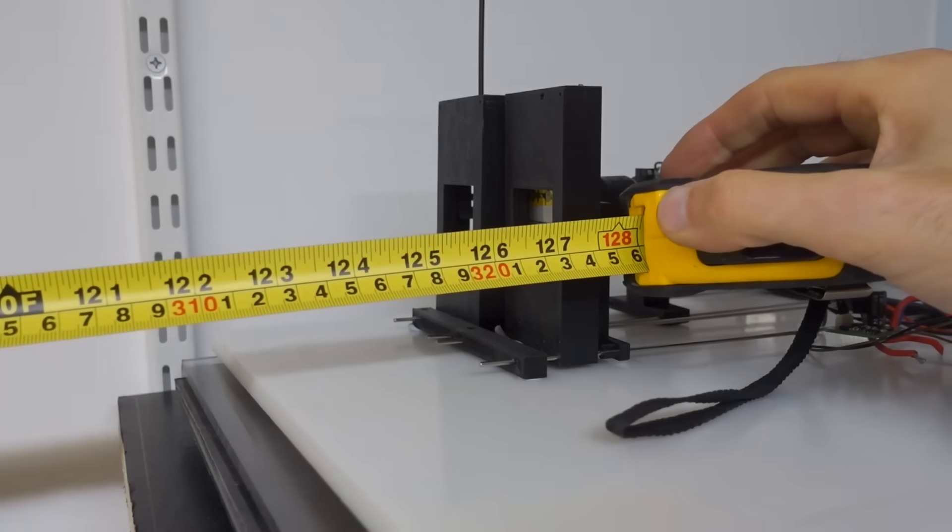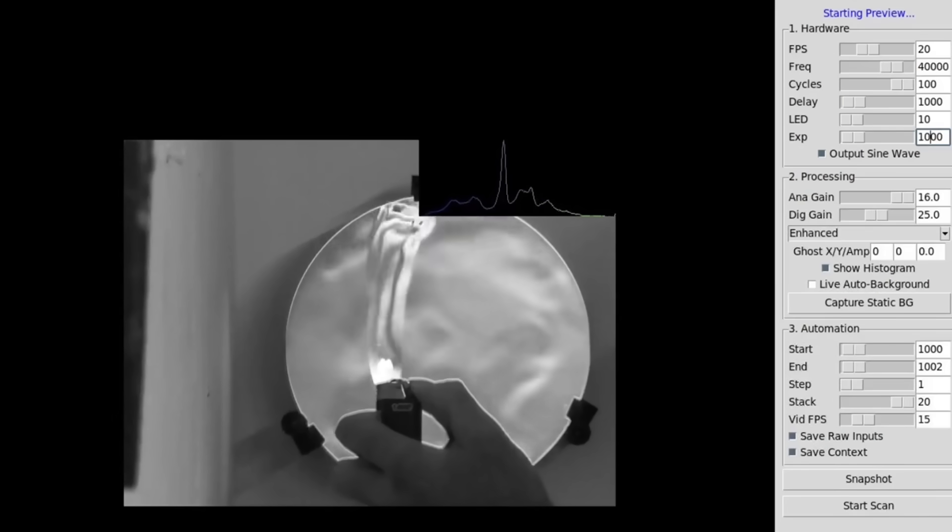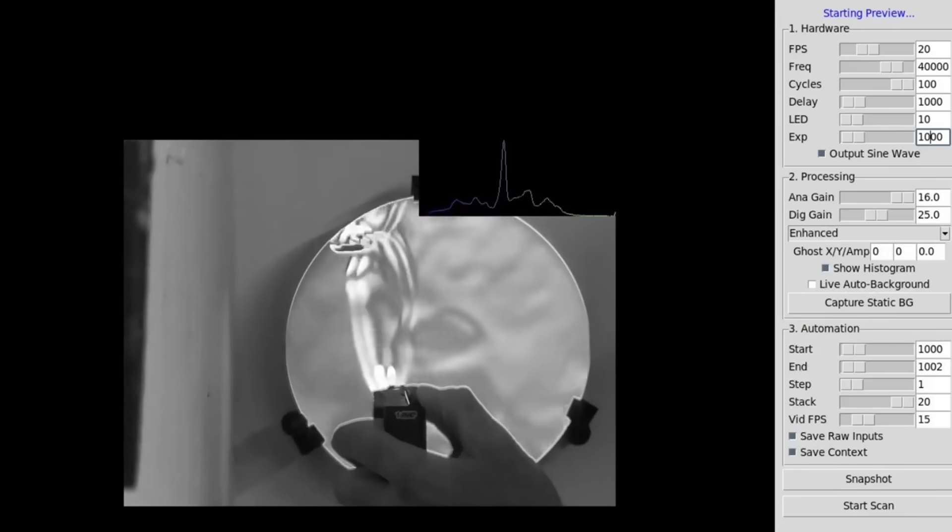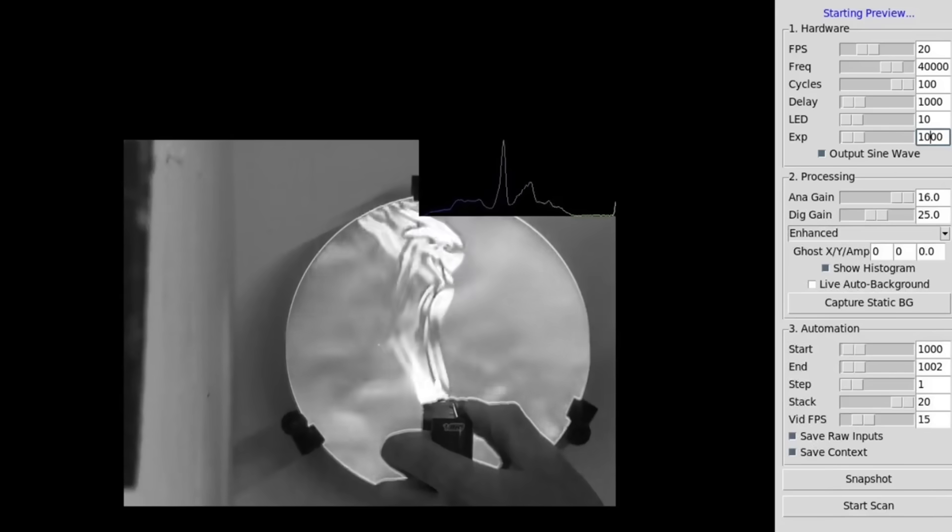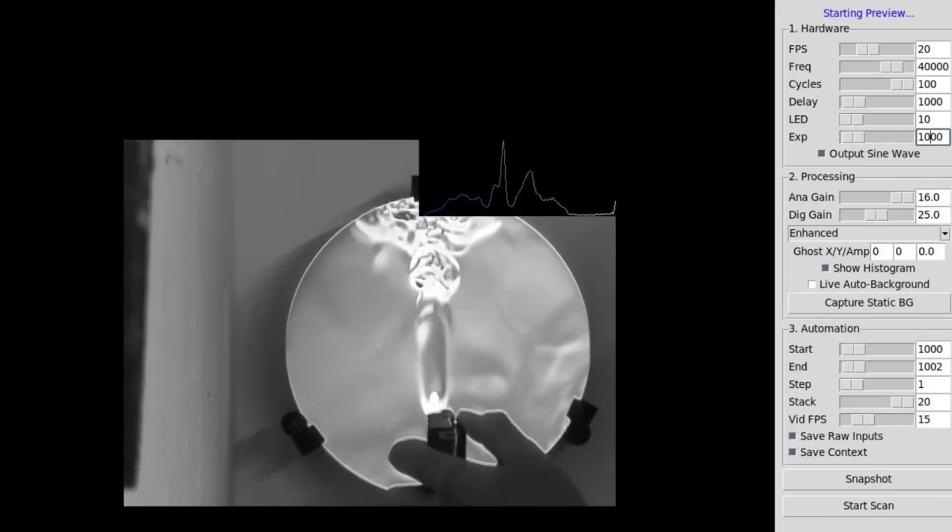Now there is one optical annoyance with the single mirror setup and that's double vision. The light passes through the sound wave twice. Once on the way to the mirror and once on the way back. To fix this I'd need a dual mirror Z type setup but that doubles the cost. So for this budget we're going to live with the double vision.